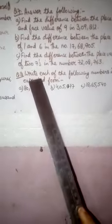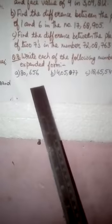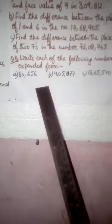Question number 8. You will write each of the following numbers in expanded form. These you have to write in expanded form. Those students who don't remember the expanded form, I will tell them first part and then you have to write the next yourself. A is 80,656. To write the answer, you will write 80,000 plus 600 plus 50 plus 6.